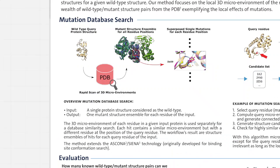An input to the tool is a single protein structure considered the wild type. A database similarity search is performed for the local microenvironment of each residue in the input structure separately. Protein structures containing similar microenvironments but with a different residue at the position of the query residue are retrieved from the database.